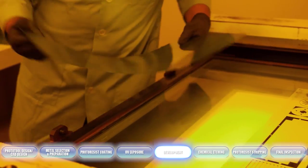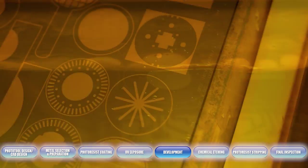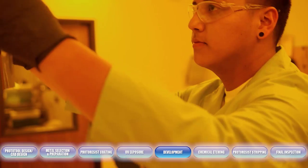After exposure, the sheets are then sent through the developing process where the soft resist is washed away and the hardened resist remains.